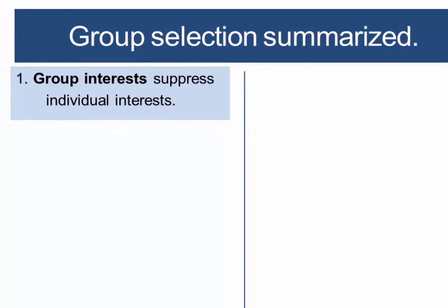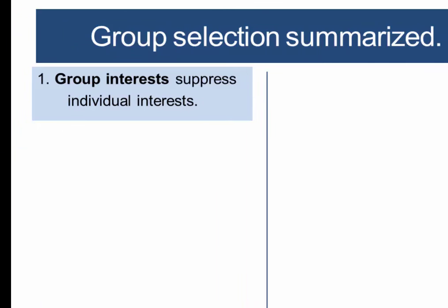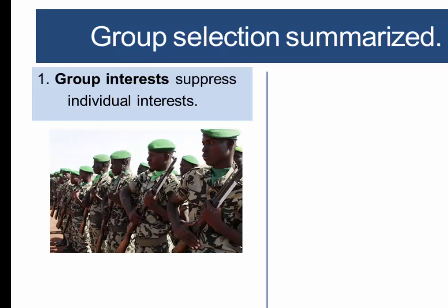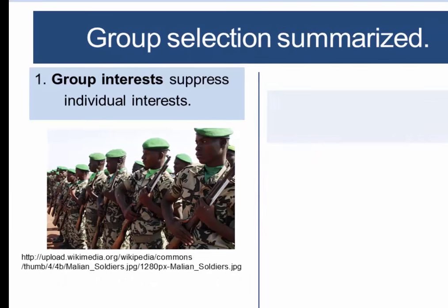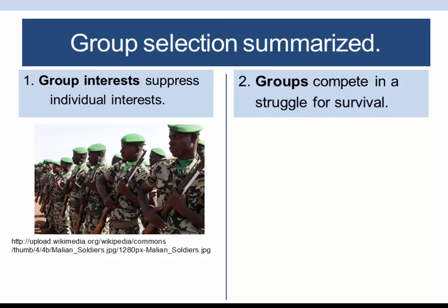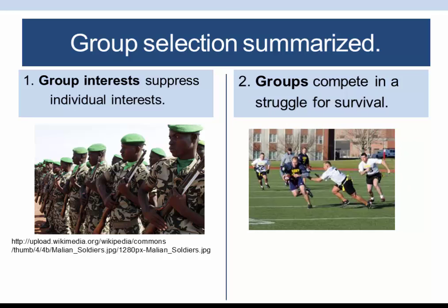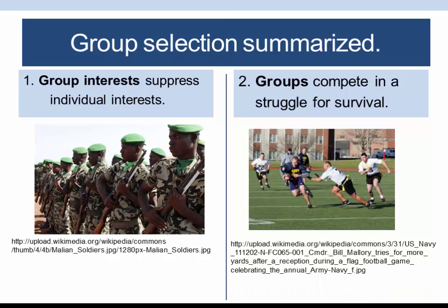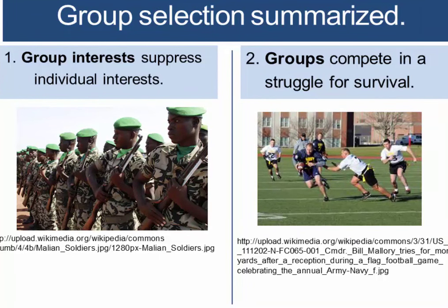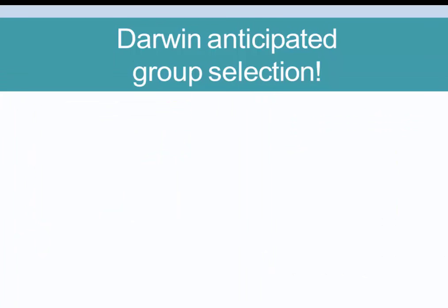Now let's connect this back to group selection. The idea is that in group selection, the interest of the group suppresses the interest of individuals. An example would be soldiers in the military — they have to give up their own best interest and do what the group needs, even if they lose their lives. Competition occurs not between individuals but at the group level, meaning selection can operate at the group level: some groups will dominate over other groups and survive, while others will lose out and be destroyed. We can see this in military conflicts, sporting events, and other group-level activities — there's a complex interaction between individual and group interest, but you have to work for the team if your team is going to win.